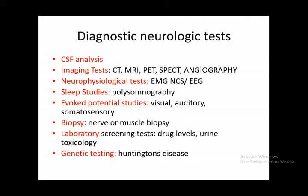Tests routinely performed in neurological departments include some more specific ones like CSF analysis, neurophysiological tests such as EMG, NCS, and EEG studies, sleep studies like polysomnography, evoked potentials like visual and auditory evoked potentials, and imaging tests like CT, MRI, PET, SPECT, and angiography. These are also performed in other specialties but have a very important role diagnostically as well as therapeutically in neurological disorders.